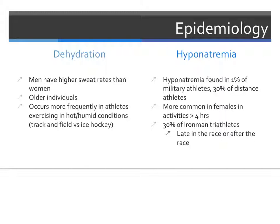Older individuals who have a blunted thirst response are also at an increased risk for dehydration due to lack of water consumption. Athletes exercising in hot and humid environments are also more at risk for dehydration than those exercising in the cold. For example, a cross-country runner in August in Tennessee would be much more at risk than an ice hockey player in Massachusetts. Hyponatremia has been found in 1% of military athletes, with 30% of those being in long distance or endurance athletes. One source cites 30% of Ironman triathlon athletes as suffering from hyponatremia, most at risk late in the race or after the finish.